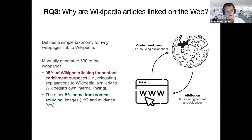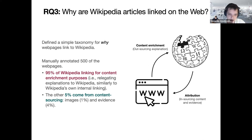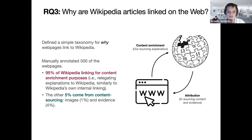The final aspect we examine is why people link to Wikipedia. We spent a lot of time trying to define a taxonomy, but for every taxonomy we could define, there were articles that broke it entirely — showing that defining a taxonomy for URLs is a difficult task. Instead, we framed this as a bidirectional relationship: a URL can link to Wikipedia as a form of content enrichment, or a URL can source evidence or images from Wikipedia. What we find is that 95% of Wikipedia linking is used for content enrichment, while only 5% is for content sourcing — specifically about 1% for images and 4% for evidence — based on an annotation of 500 Wikipedia links occurring in web pages.